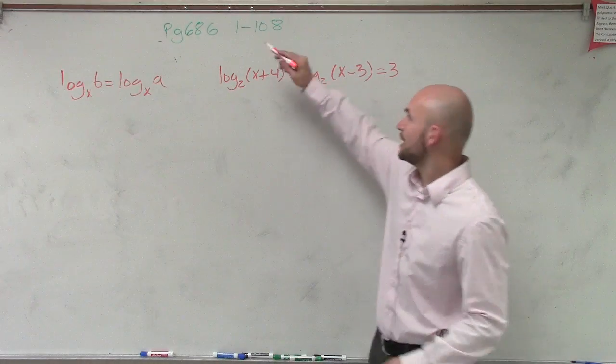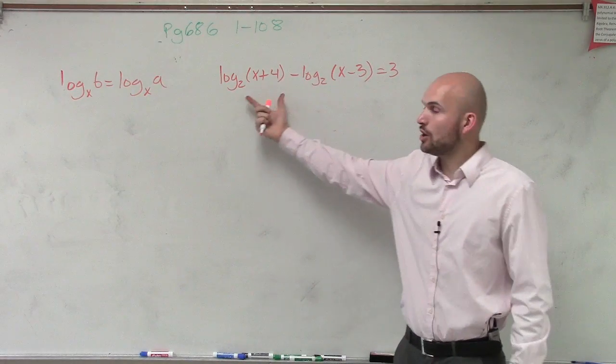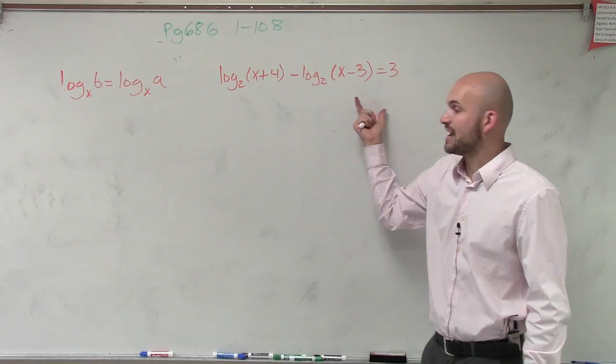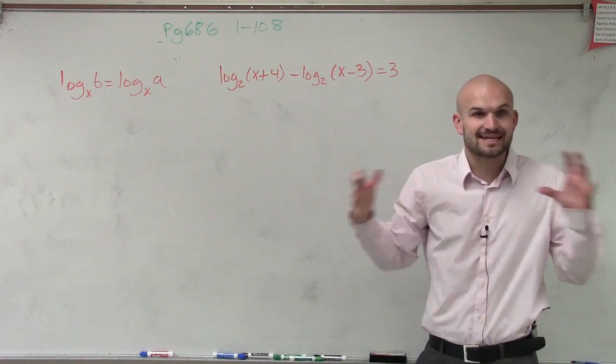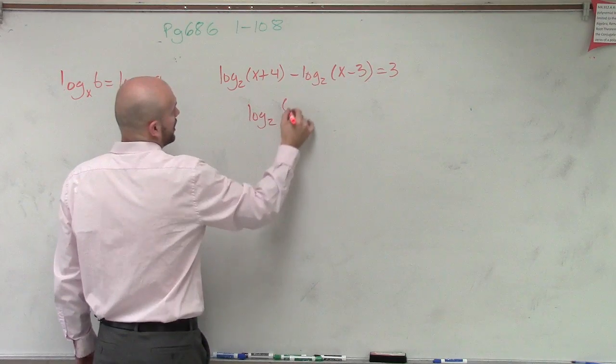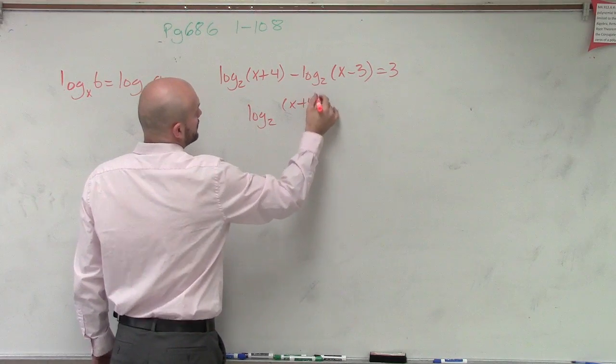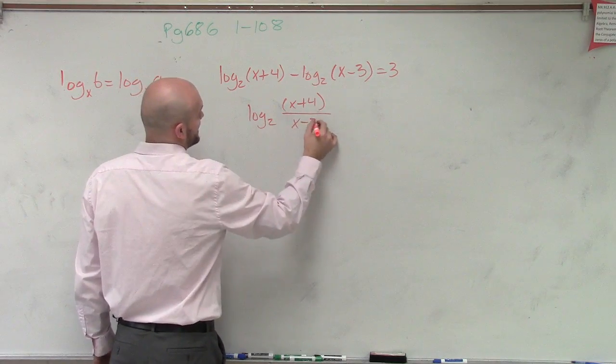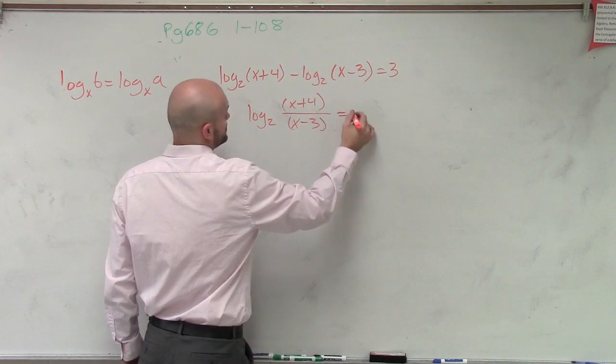So don't just say, oh, I'm going to cancel out the logs. We know that if we have a logarithm, same base, and I'm subtracting them, I can condense that to log base 2 of x plus 4 over x minus 3 equals 3.